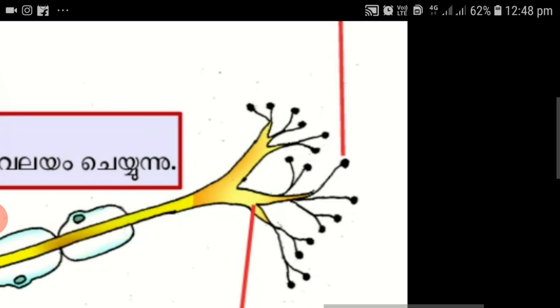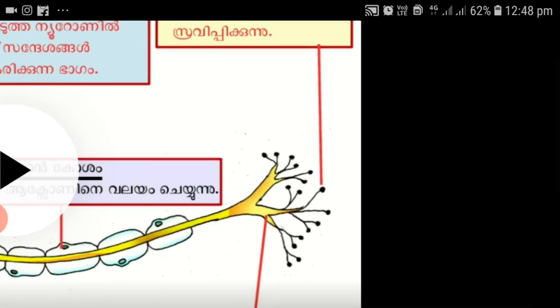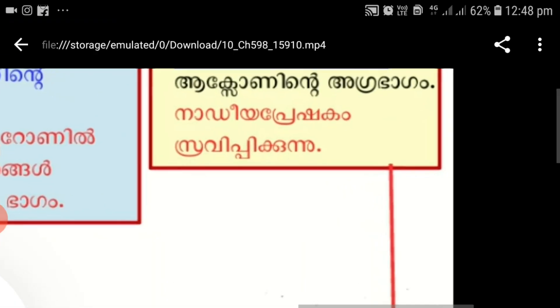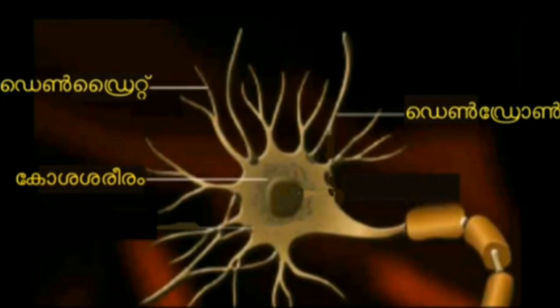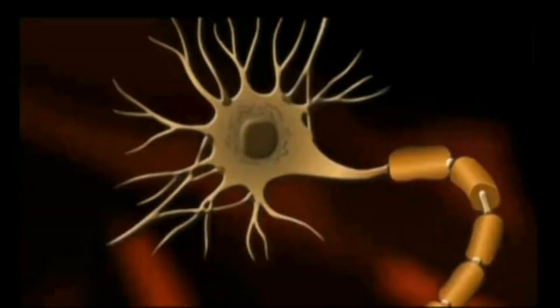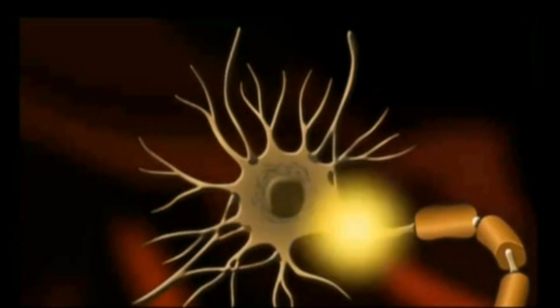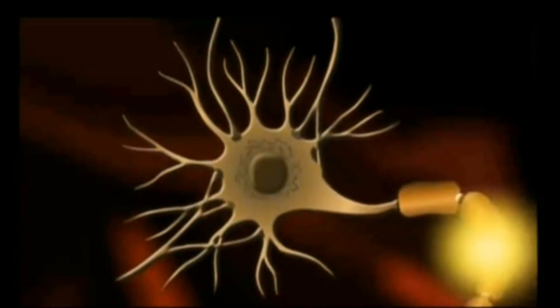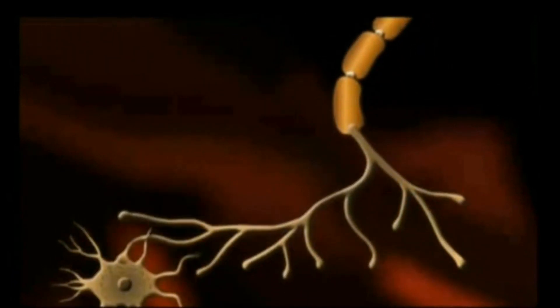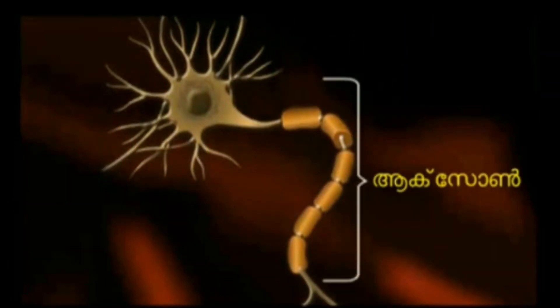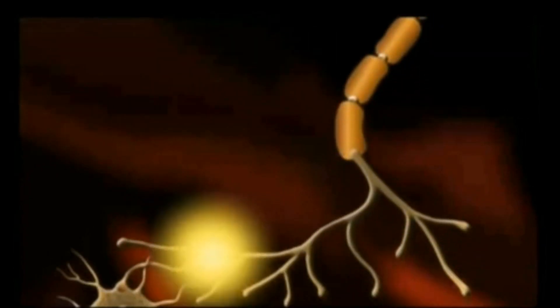At the tip of the axonite you can see knob-like structures or sac-like, ball-like structures. They are known as synaptic knobs. Now tell me the function of axon and axonites. Axon transfers messages or impulses from the cell body to axonites, and axonites transfer these impulses to the synaptic knob.